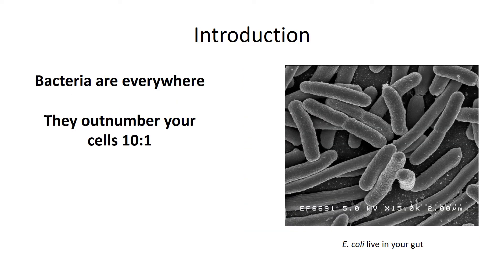The first cells on the planet were similar to modern bacteria. Modern bacteria are everywhere — they live in the soil, they live in and on you, and they outnumber you 10 to 1. For every one cell that is you, there are approximately 10 bacteria cells, meaning you have over 100 trillion bacteria living in and on you.